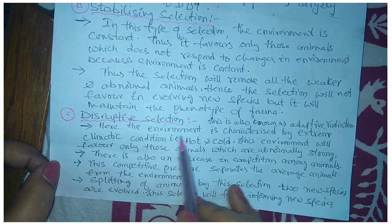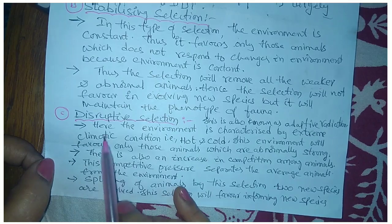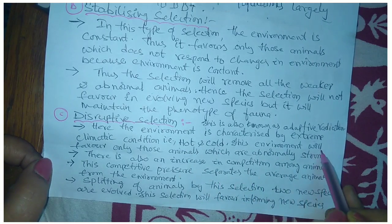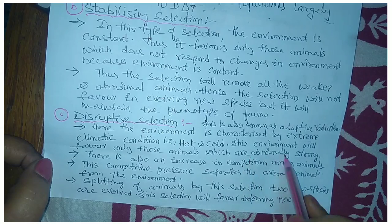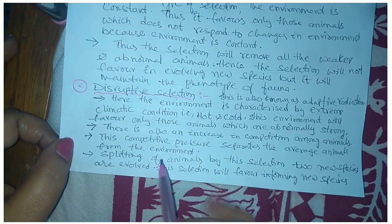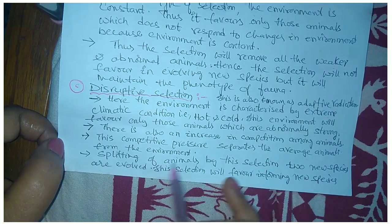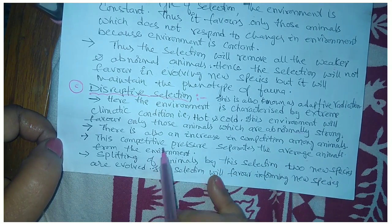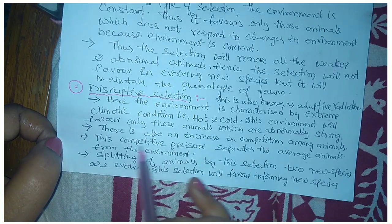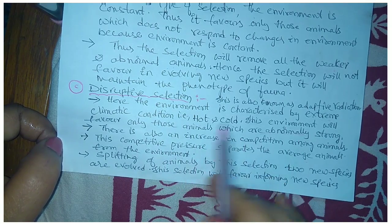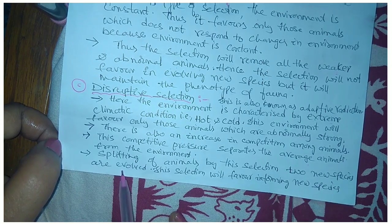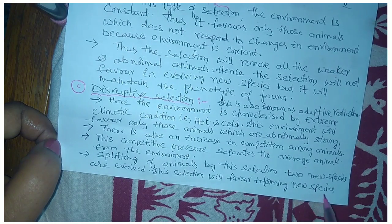The last one is disruptive selection, also known as adaptive radiation. Here the environment is characterized by extreme climatic conditions — that is, hot and cold — and will favor only those animals which are abnormally strong. There is also increased competition among animals, and this competitive pressure separates the average animals from the environment. In this type of environment, both the abnormal animals and the average animals can survive, so competition appears between these two groups and they separate from the environment. This splitting of animals leads to two new species being evolved, so disruptive selection favors forming new species.